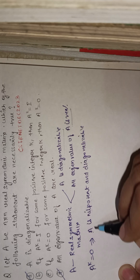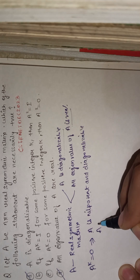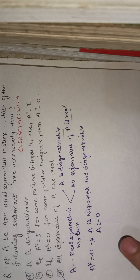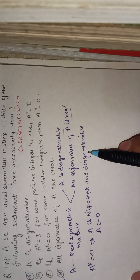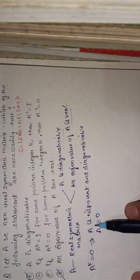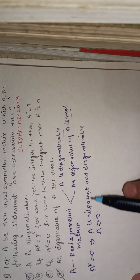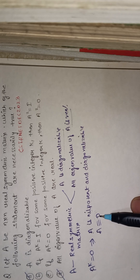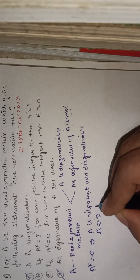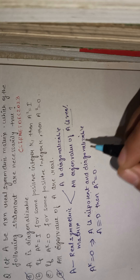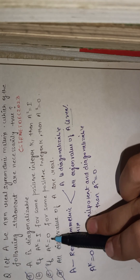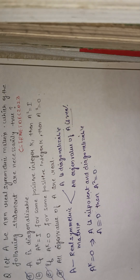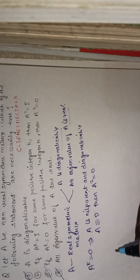The only matrix which satisfies both conditions — nilpotent and diagonalizable — is the zero matrix. If A is equivalent to the zero matrix, then A² is also zero. So the option stating: if A^k = 0 for some positive integer k then A² = 0, is correct.